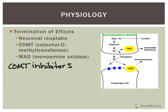A monoamine oxidase (MAO) enzyme oxidizes and breaks down norepinephrine and epinephrine, but also serotonin. MAO inhibitors are often given to people with depression to help serotonin levels in these individuals.